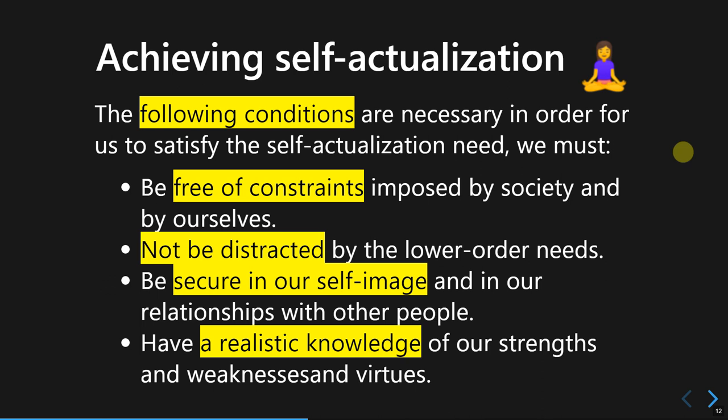Before achieving self-actualization, there are four conditions one must fulfill. The first condition is that we need to be free of constraints imposed by society and by ourselves. This is why achieving self-actualization only makes sense at middle adulthood, when we have reached the peak of our career and society sees us as a fully achieving person, giving us the flexibility and freedom to express ourselves and our values.